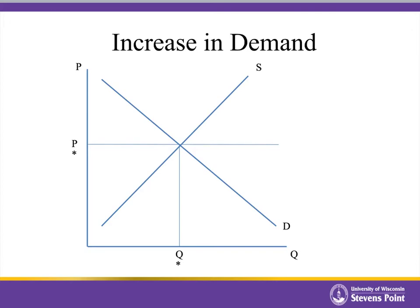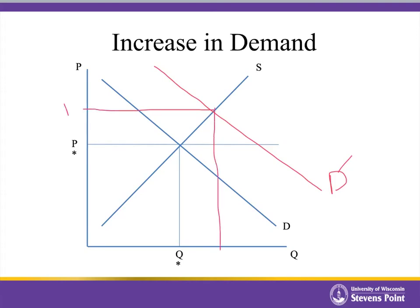Let's look at what happens if we have an increase in demand. Perhaps there's an increase in the number of buyers, an increase in income levels for a normal good, or the good is simply becoming more popular. If demand increases, the demand curve shifts to the right. If the price doesn't change, now we've got a shortage of the product, which puts upward pressure on the price. The price increases toward the new equilibrium. We end up with an equilibrium price that's higher than where we started, and an equilibrium quantity that's also higher than where we started.